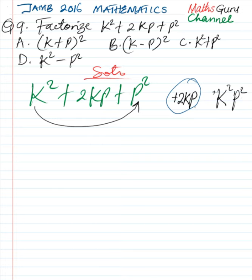So we can think of the various factors of k square p square. So we have kp, kp can go. So if we have kp plus kp, we are going to have 2kp.